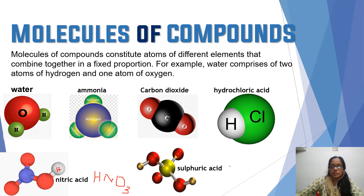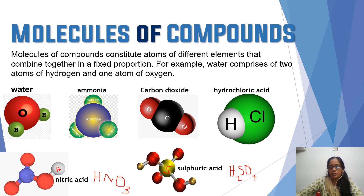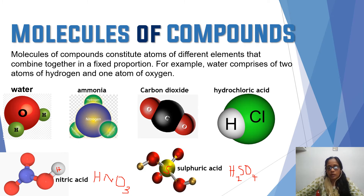And this is sulfuric acid, H2SO4. There are two hydrogen atoms, one sulfur atom, and four oxygen atoms — that is one molecule of sulfuric acid. So that is molecules of compounds. Now, what is the atomicity of sulfuric acid? Counting all atoms present in one molecule: 1, 2, 3, 4, 5, 6, 7 — so the atomicity of sulfuric acid is 7.